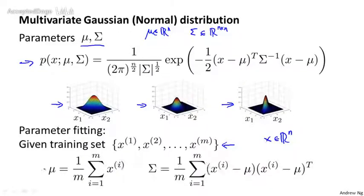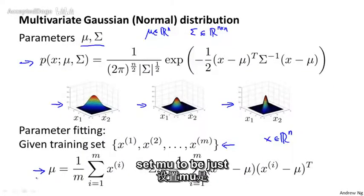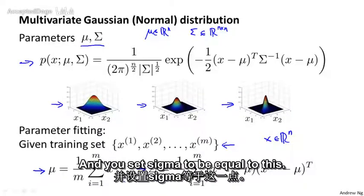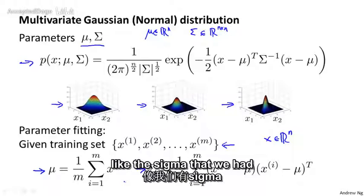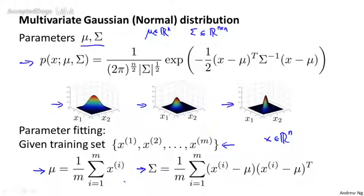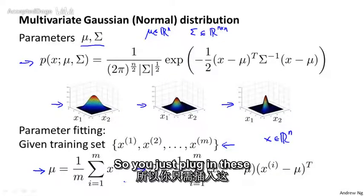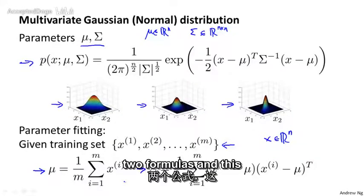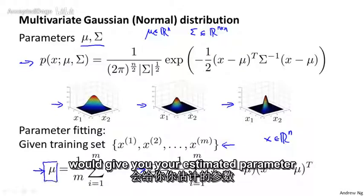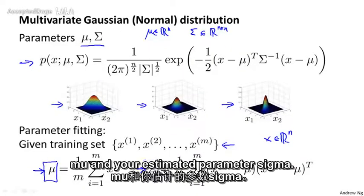The standard formulas for estimating them are: you set mu to be just the average of your training examples, and you set sigma to be equal to this formula — which is actually just like the sigma we had written out when we were using PCA, or the principal components analysis algorithm. So you just plug in these two formulas and this will give you your estimated parameters mu and sigma.